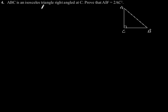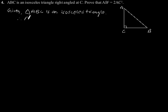Considering this figure, given that triangle ABC is an isosceles triangle, therefore AC is equal to CB.